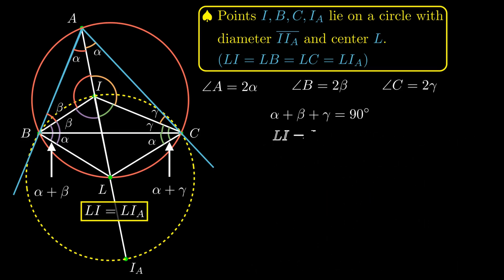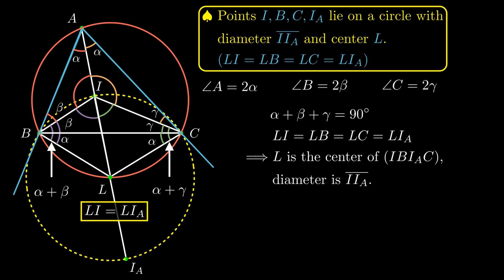Now since these four lengths are equal, L is the center of the circumscribed circle of the quadrilateral IB, I sub A, and C. And the diameter must be the segment I and I sub A, because I and I sub A lie on the circle and they are reflections over the center L. So this proves the first fact.